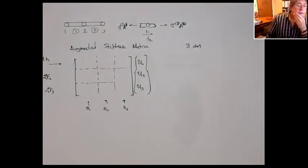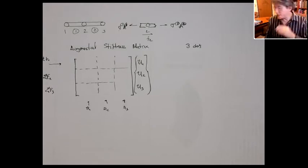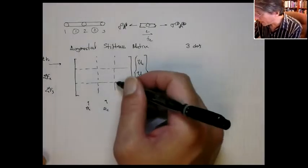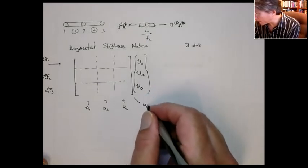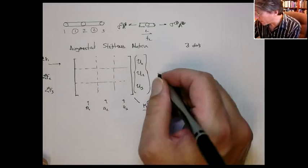So when I do the augmented stiffness matrix, what I do is I write the stiffness matrix for each element, but in the global stiffness matrix. So if you look at it this way, I'm going to actually write this augmented stiffness matrix, but for element 1.